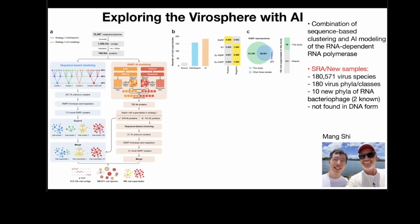We did that using published data on the SRA as well as our own data. In that procedure, we discovered 180,000 new viruses falling into different classes. We also made sure they were only in RNA form — not DNA form — to confirm they were RNA viruses. We also found that there are now not just two but likely ten families or phyla of RNA viruses that are bacteriophage. So this has completely expanded our view of the virus sphere.